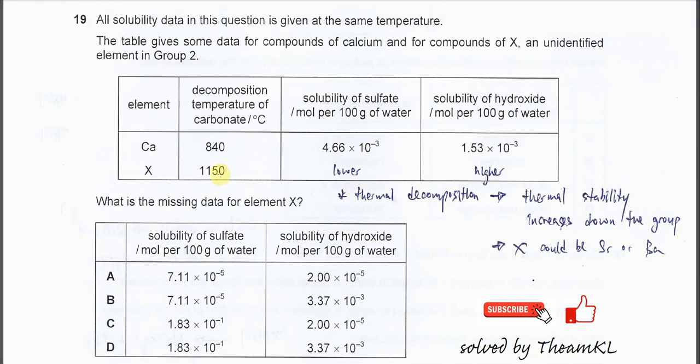Question 19. All solubility data in this question is given at the same temperature. The table gives data for compounds of calcium and compounds of X, and X is an element in Group 2.